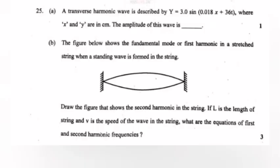A transverse harmonic wave is described by y equals 3.0 sin(0.018x plus 36t), where x and y are in centimeters. The amplitude of the wave is _____. The figure below shows the fundamental mode or first harmonic in a stretched string when a standing wave is formed.